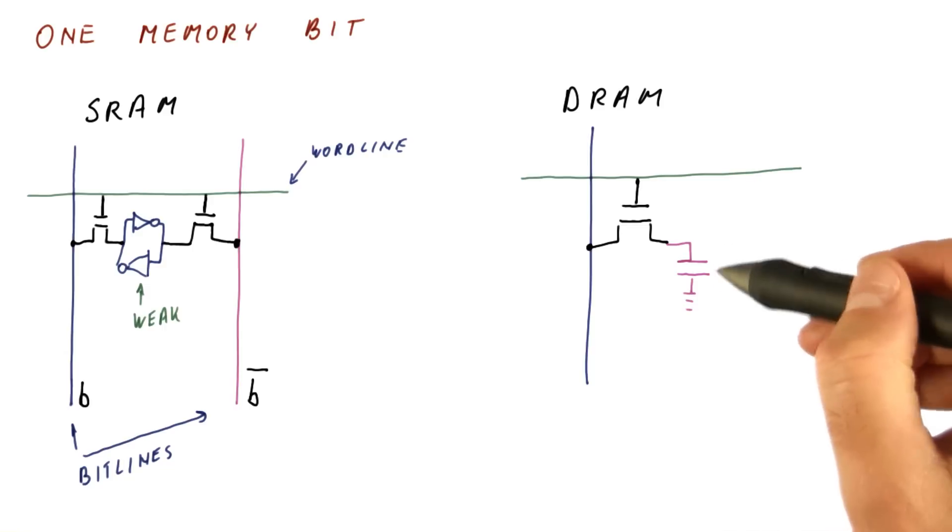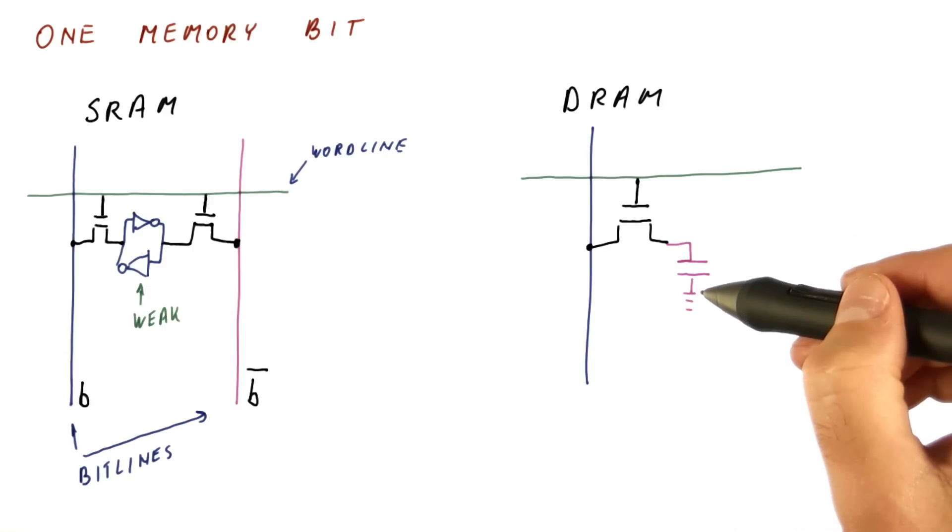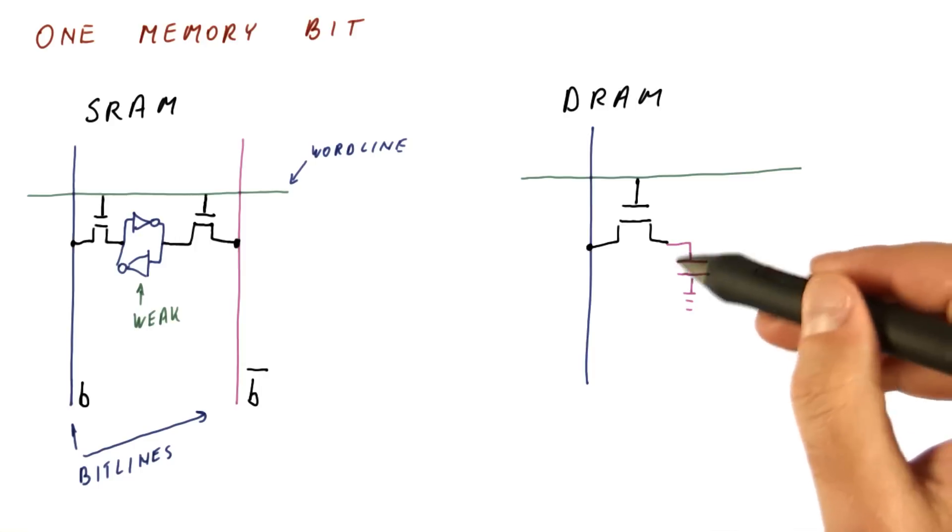So as you can see, the bit is really stored in this capacitor. When it's charged, we are storing a 1. When it's not charged, we are storing a 0.